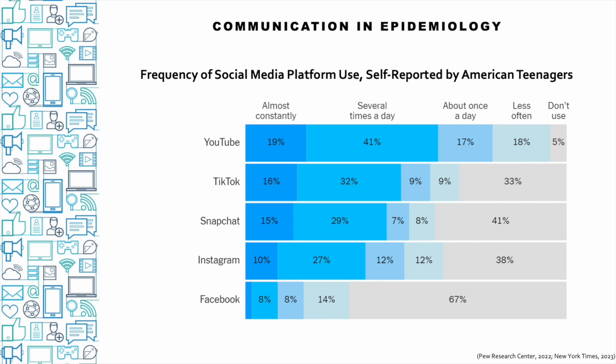With social media use and teen mental health, it's also hard to know the direction of a causal relationship if one exists. Do depressed teenagers use social media more? Or do teenagers who use social media more become depressed? Are the effects of interacting with content from people you know in real life different from content generated by strangers or bots? These questions are all difficult to study using epidemiologic methods.